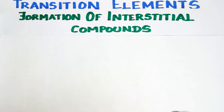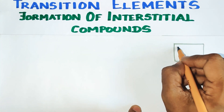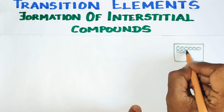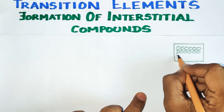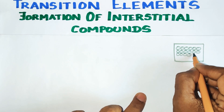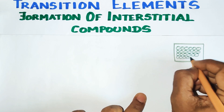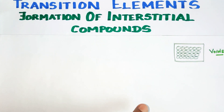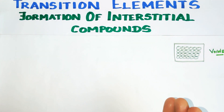First, we will know what interstitial is. There is a metal and the metal atoms are closely packed. Usually, metals are crystallized — look at the HCP structure and the FCC structure. There is a gap. If you look at the solid state, these gaps are called voids or holes. The voids are of two types: one is the tetrahedral void, and the other is the octahedral void.